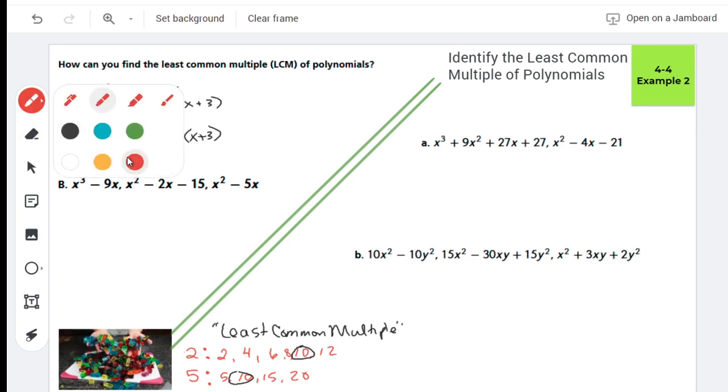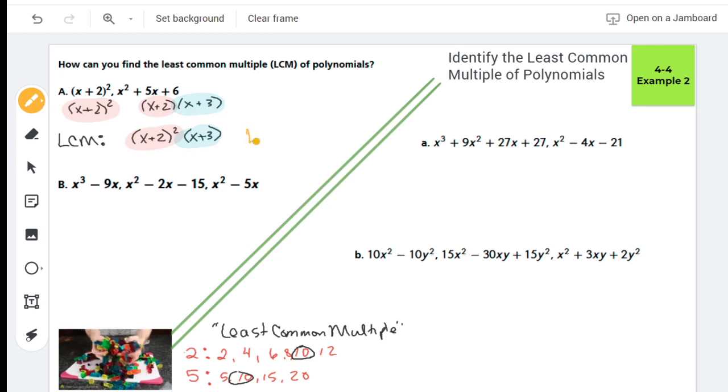So what I do when I'm considering this is I think about it as a set of Legos. I'm going to call x plus 2 red Legos, and I'm going to call x plus 3 blue Legos. My least common multiple is like the Lego set, so it's what Legos I have in my possession. Whereas these up here, the factors, these are my Lego patterns.